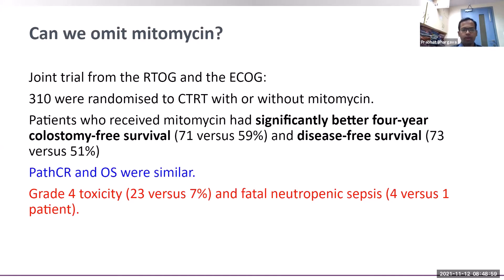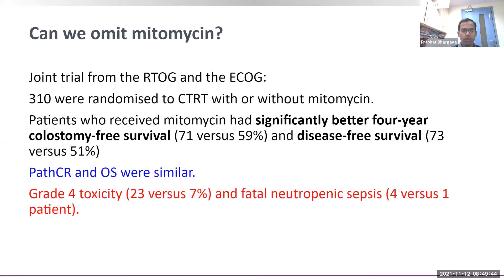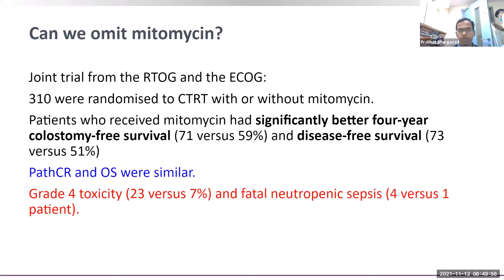A concern arose that mitomycin C was too toxic — around 23 percent of patients experienced hematological toxicities. A joint RTOG/ECOG trial of 310 patients randomized to CRT with 5-FU with or without mitomycin C. Patients receiving mitomycin C had significantly better 4-year colostomy-free survival by 12 percent and disease-free survival better by around 22 percent. Though grade 4 toxicities and fatal neutropenic sepsis were more common in the mitomycin arm, it remains standard of care due to superior colostomy-free and disease-free survival.